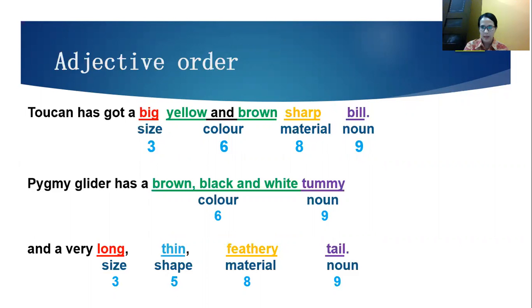So, the first one is the number. Number talking about one, two, three. Second one, opinion could be fabulous, amazing, and so on. The size, of course, talking about big. And age, could be old, young, and so on. Shape, fat. Color, the color that you know. Origin, where it comes from. Costa Rican example, material, furry. And the noun. So, the noun that is being described will be put at the back.